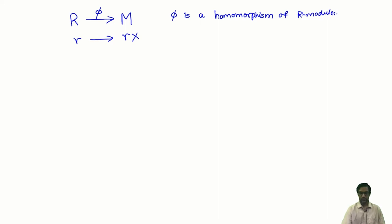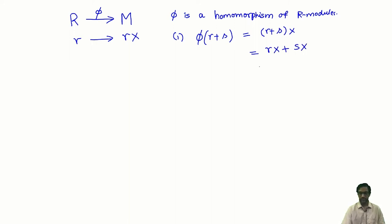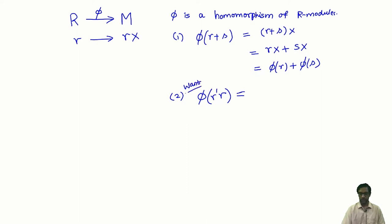Let us verify the properties. We need to check that if I take a sum of two elements on the left, φ(r + s) = (r + s)x. The fact that M is an R-module gives us the distributive property, so this equals rx + sx, which is φ(r) + φ(s). That is the first property. Now I need to check that φ(r′r) = r′·φ(r), so I want to be able to pull out the scalar r′.